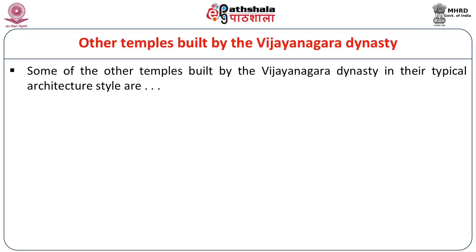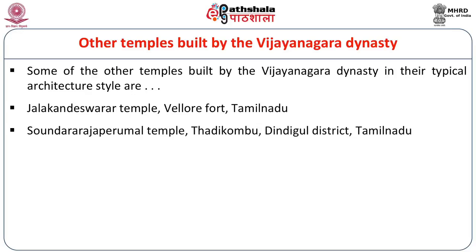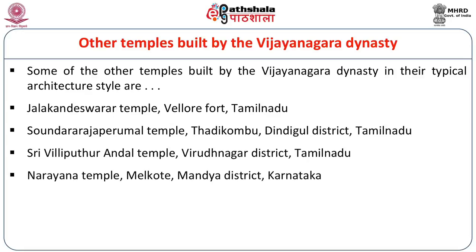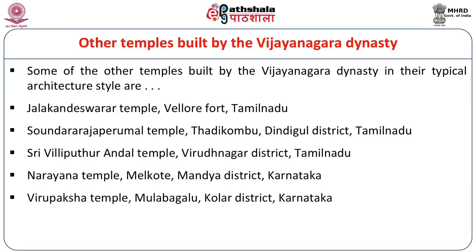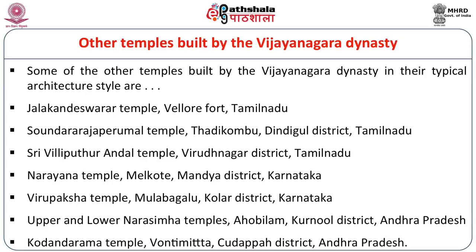Other temples built by the Vijayanagara dynasty in their typical architectural style include: the Jalakandeshwarar temple in the Vellore Fort, Tamil Nadu; the Sondara Raj Perumal temple, Tadi Kumbu, Dindigal district, Tamil Nadu; the Sri Villiputtur Andal temple in Virudhanagar district, Tamil Nadu; the Narayanan temple, Melkote, Mandya district, Karnataka; the Virupaksha temple, Moolabagalu, Kolar district, Karnataka; the upper and lower Narasimha temples, Ahobilam, Kurnool district, Andhra Pradesh; and the Kodanda Rama temple, Ontimitta, Kadappa district, Andhra Pradesh. This is not an exhaustive list, just a small selection of architecturally important temples.